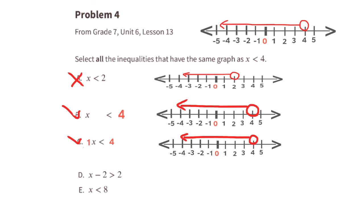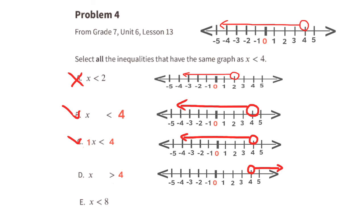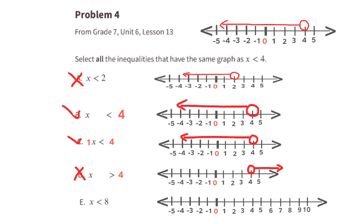D: x minus 2 is greater than 2 — add 2 to both sides, giving x is greater than 4. That is not the same graph as x is less than 4. E: x is less than 8 — the circle would be above 8 with the arrow pointing left, so that is not the same graph either.